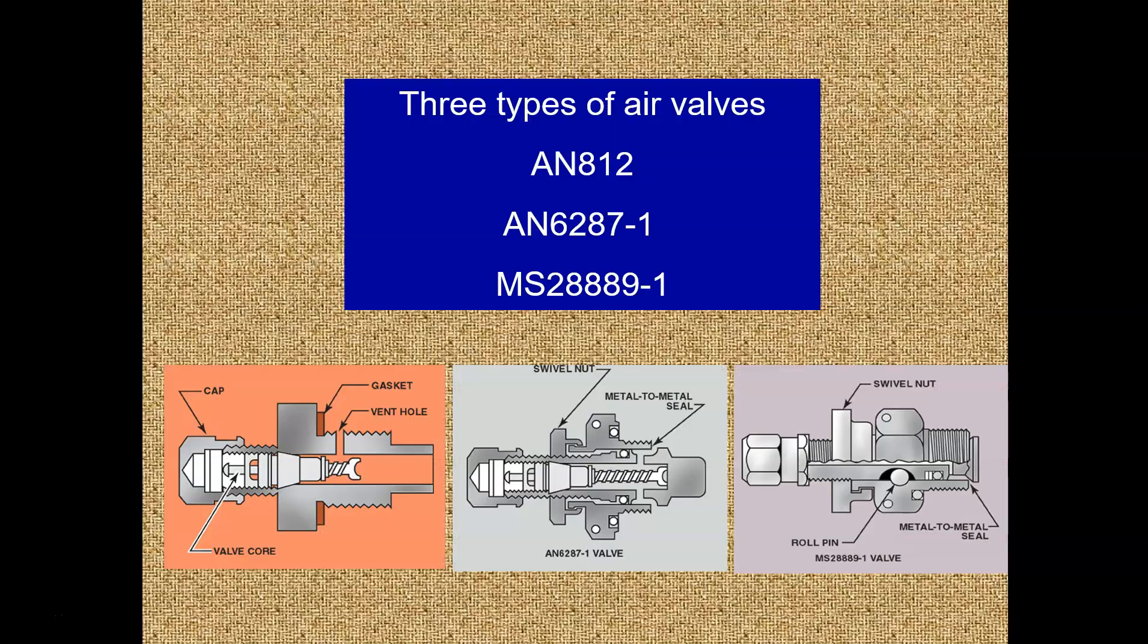We'll see that this 1,500 psi valve is very different from the others. Let's look at another picture here. These are three types: AN-812, AN-86287-1, and MS-2888-9-1. Easy for me to say. I don't remember these numbers. They're on the slide, right?